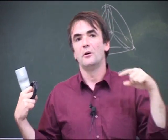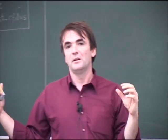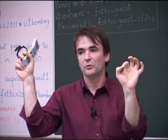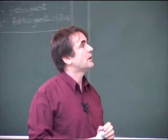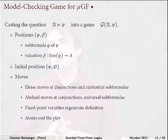The positions in the game are a pointer to a place in the formula and a pointer to a place in the structure. We start with the entire formula and point to no particular place in the structure, since we talk about sentences with no free variables. The moves are designed so that if a formula is true with free variables bound to a point in the structure, then Alois should be able to keep it true; and if it's false, then Abelard should be able to keep it false.